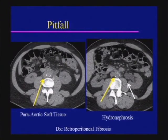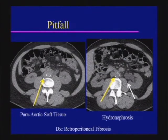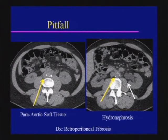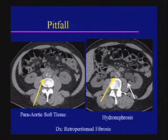A pitfall of AAA imaging: abnormal para-aortic tissue without an abdominal aortic aneurysm, with para-aortic soft tissue and hydronephrosis, represents retroperitoneal fibrosis. Lymphoma would also be in the differential for this appearance.